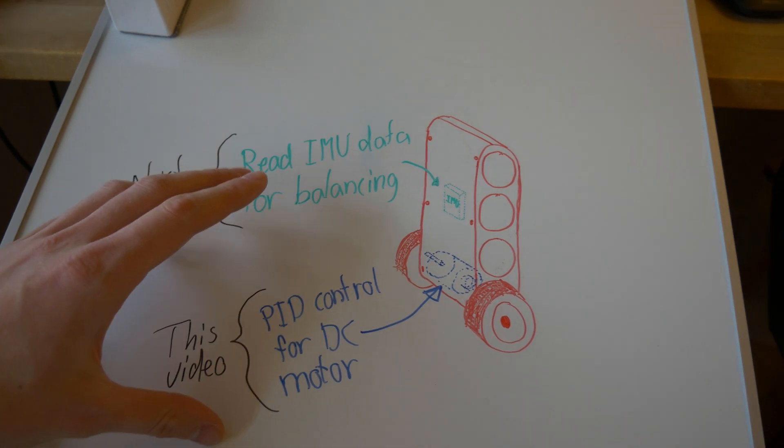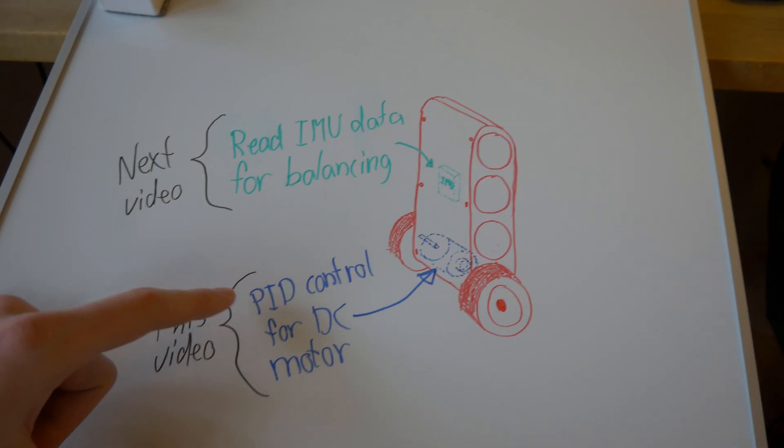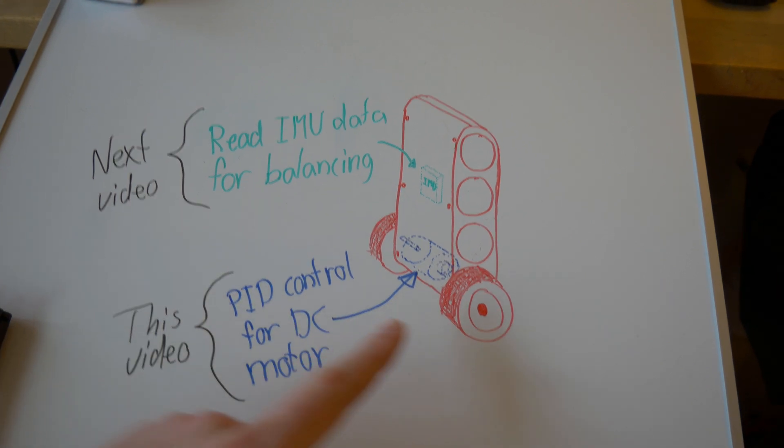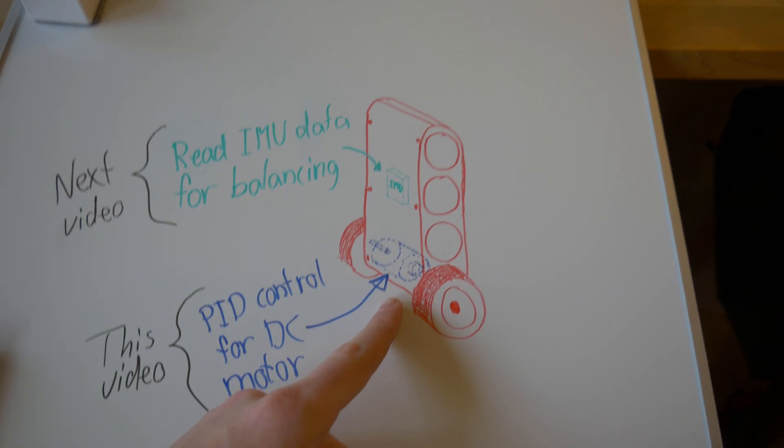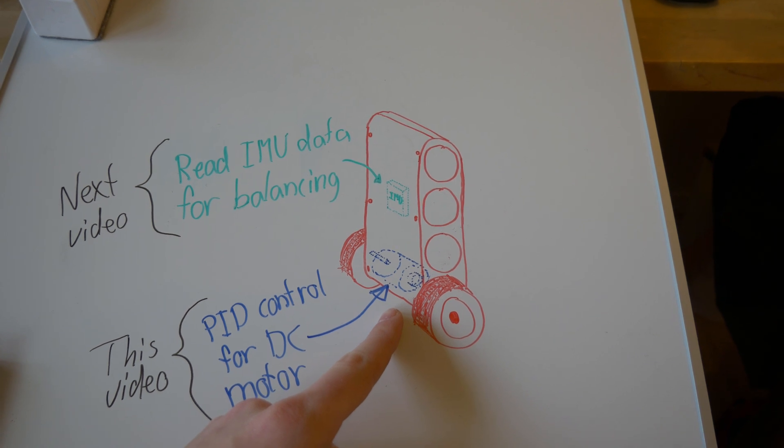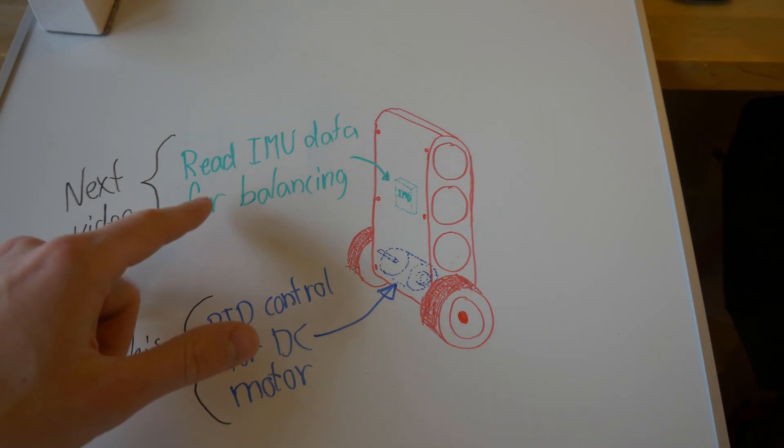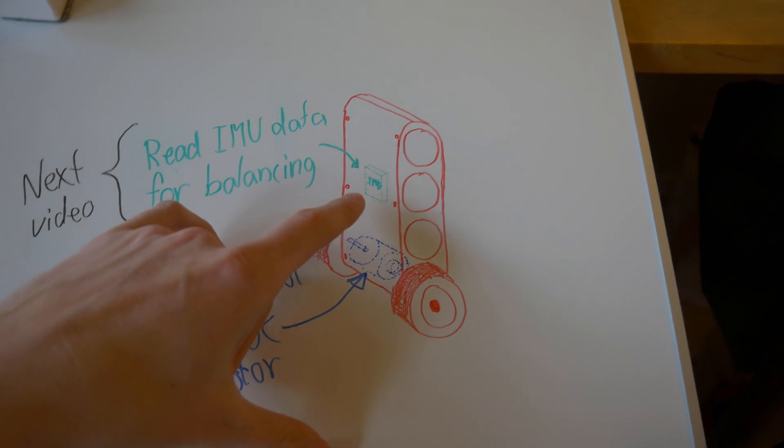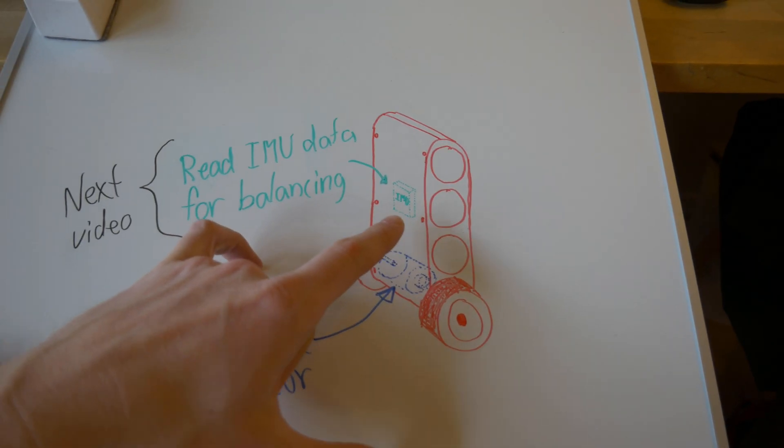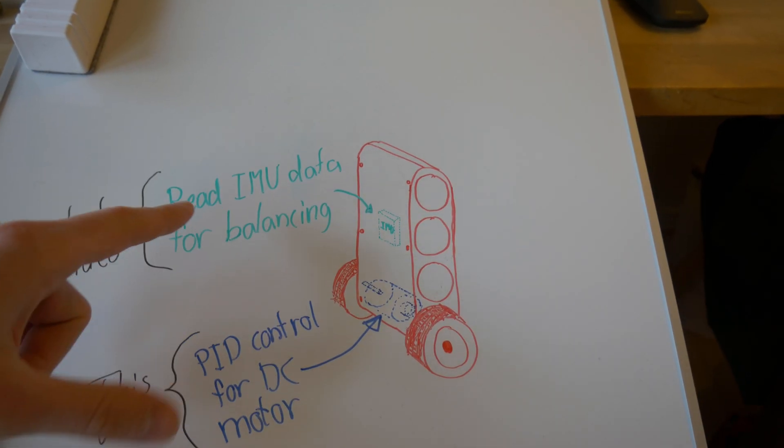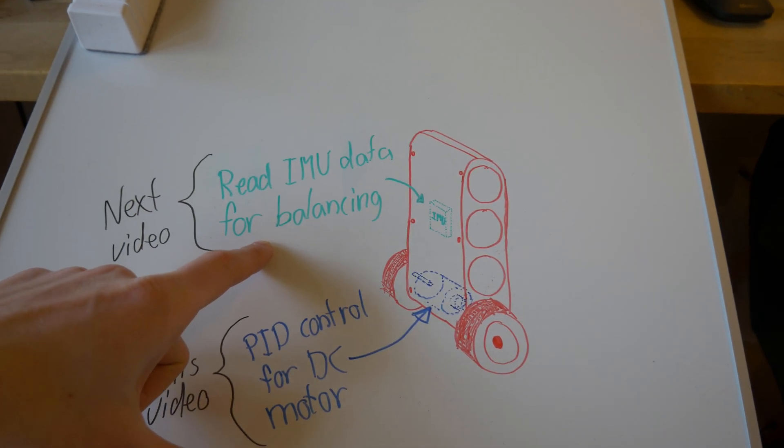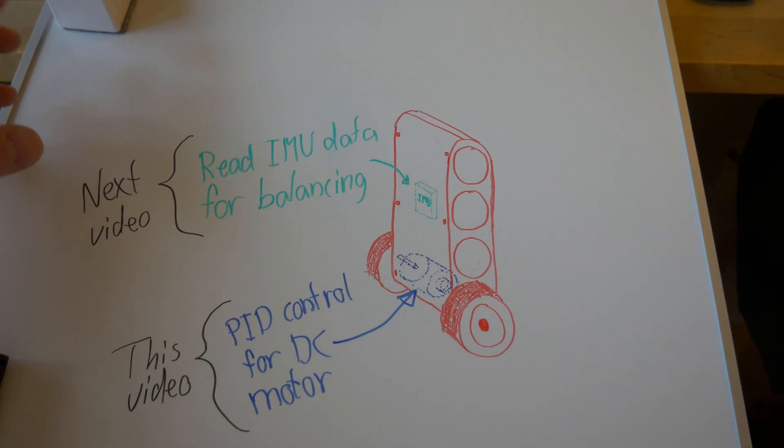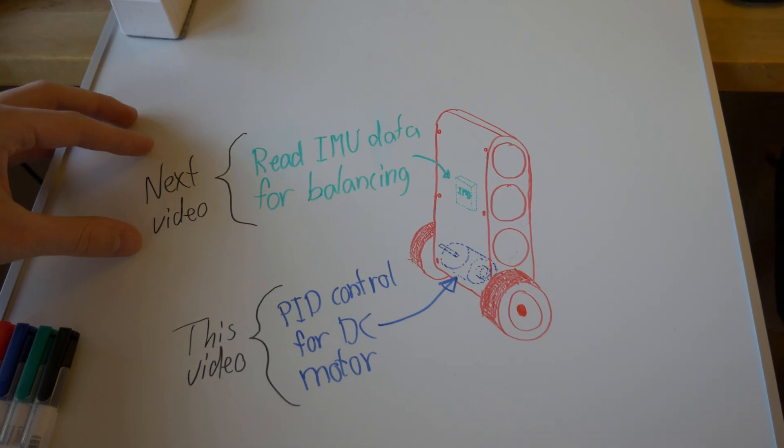So this video was all about making the PID controller that controls the two DC motors in the balancing robot. In the next video I will focus on reading some data from the IMU that's going to be mounted in the robot. So that's reading the accelerometers and the gyro, and then trying to do some balancing. That's going to be pretty exciting.